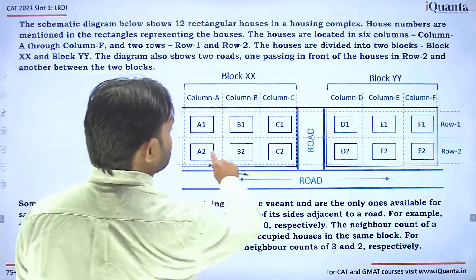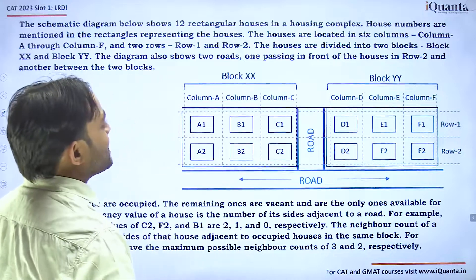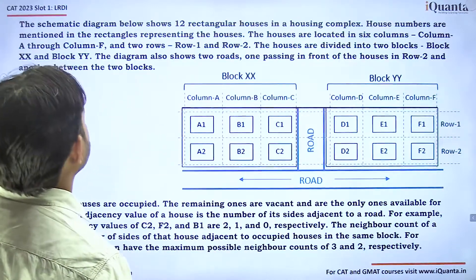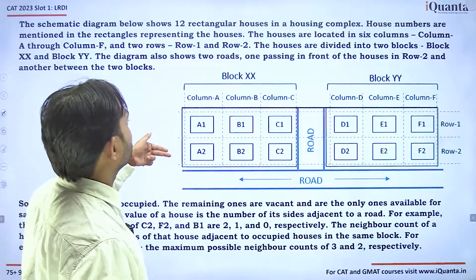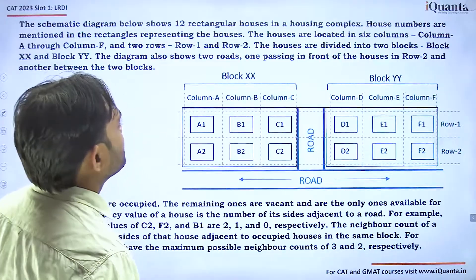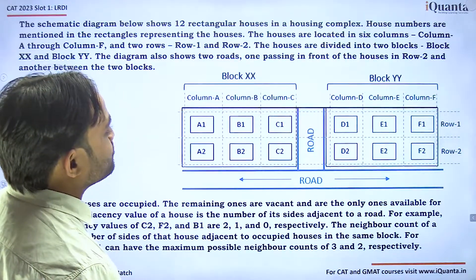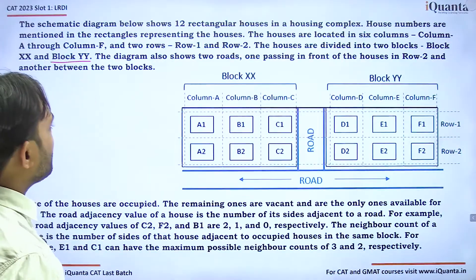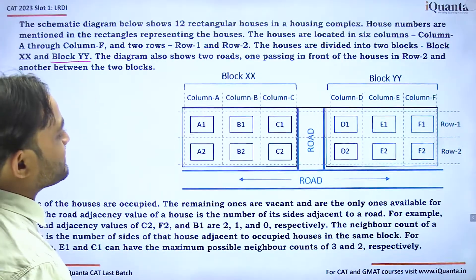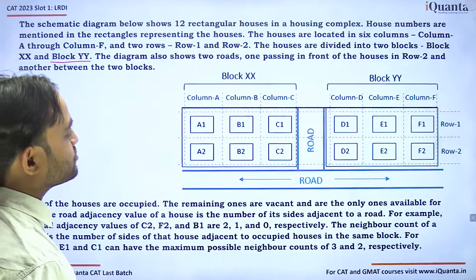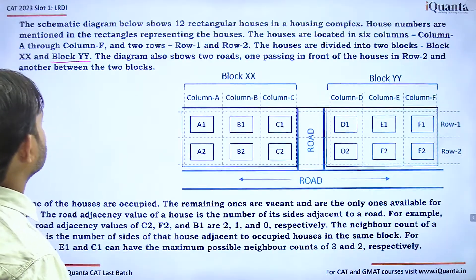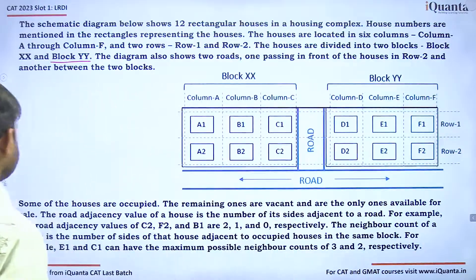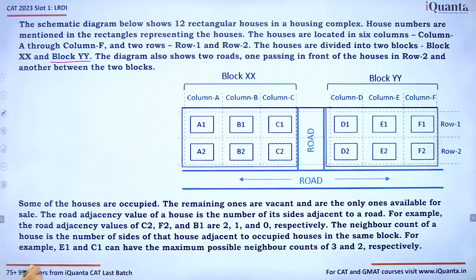The houses are located in six columns, Column A through Column F, and two rows, Row 1 and Row 2. The houses are divided into two blocks: Block XX and Block YY. The diagram also shows two roads — one passing in front of the houses in Row 2 and another between the two blocks.